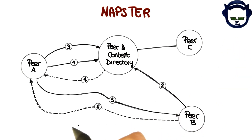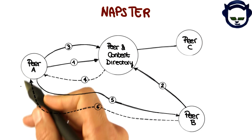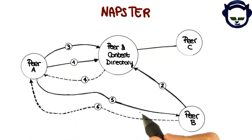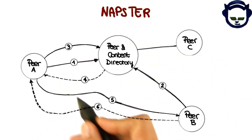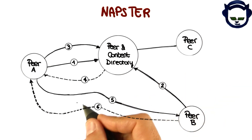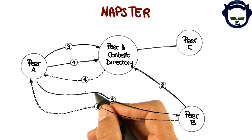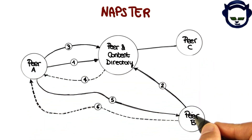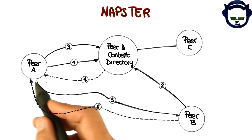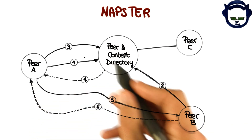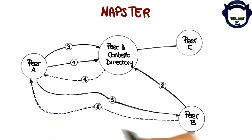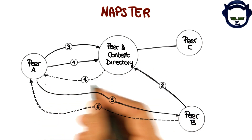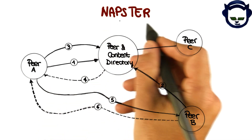I'm going to illustrate the way Napster works by showing you the basic configuration of Napster and the interactions between its elements. Let's look at how such interaction can take place for the three peers shown here. In this case, peer A and B are the only ones really involved in the action.